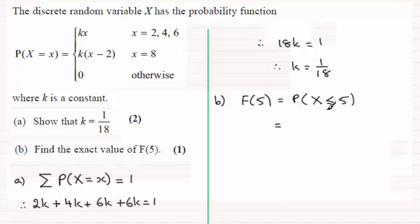So for this distribution, what are the values that are less than or equal to 5? Well, they're just going to be the 2 and the 4. So this is the same as working out the probability that x equals 2 plus the probability that x equals 4.